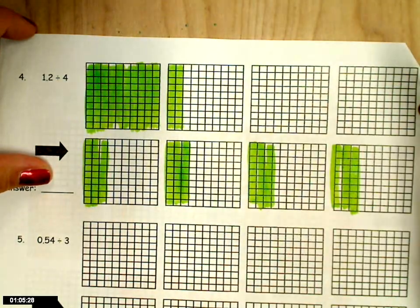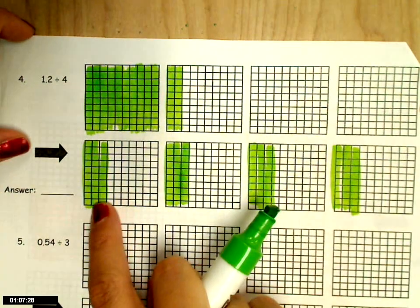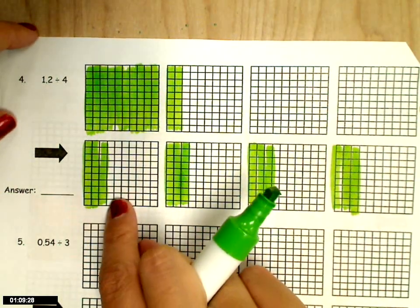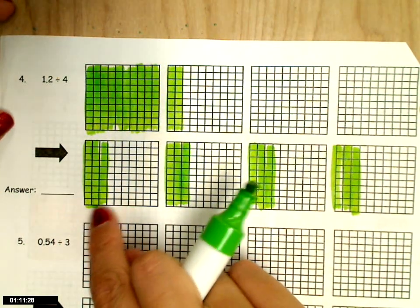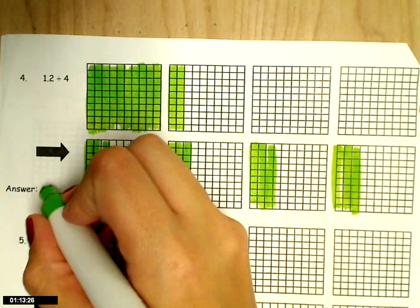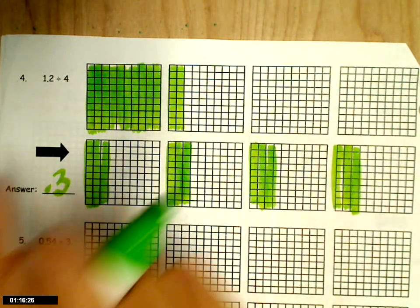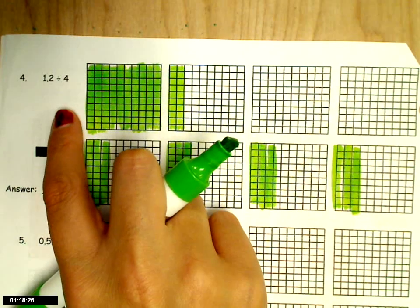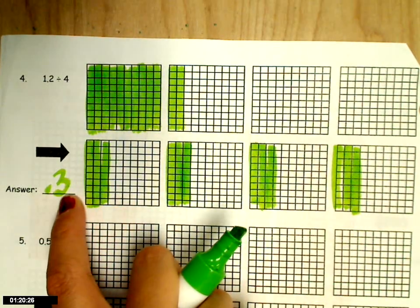And I've run out of my tenths. And so my answer now is how many are in one group, and I have 3 tenths in a group. And that's it. So 1 and 2 tenths divided by 4 is 3 tenths.